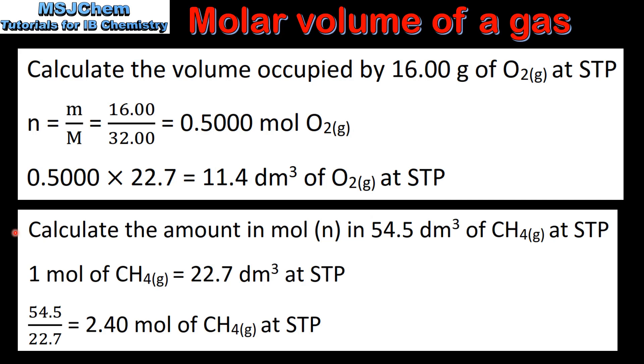In our next example, we'll calculate the amount in moles in 54.5 decimeters cubed of methane gas at STP. One mole of methane gas occupies a volume of 22.7 decimeters cubed at STP. Next we divide 54.5 by 22.7, and this gives us 2.40 moles of methane gas at STP.